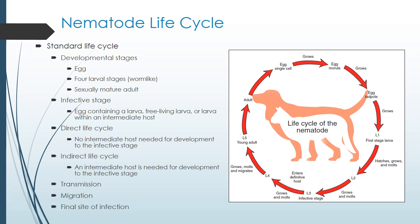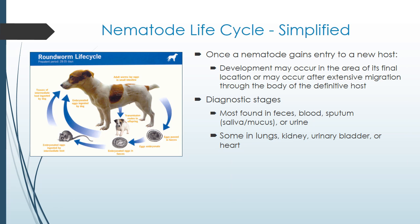The life cycle of a nematode has a standard structure. The developmental stages are the egg, four larval stages, and the sexually mature adult. The infective stage may be an egg containing a larva, a free-living larva, or a larva with an intermediate host. The direct life cycle has no intermediate host needed. The indirect life cycle requires an intermediate host. Once a nematode gains entry into a new host, development may occur in its final location or after extensive migration throughout the body. Diagnostic stages are most often found in feces, blood, sputum, or urine, and sometimes in the lungs, kidney, urinary bladder, and heart.